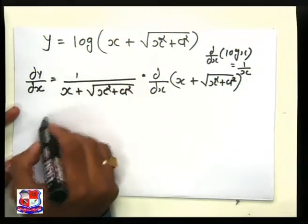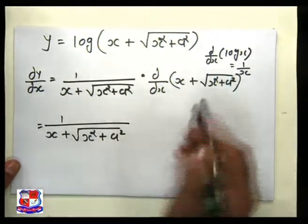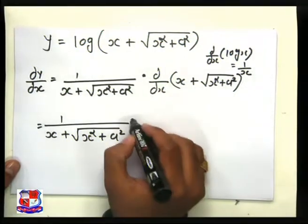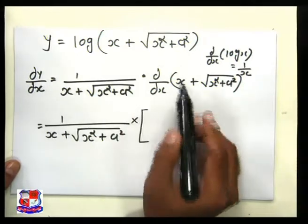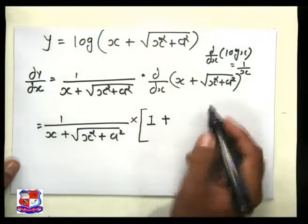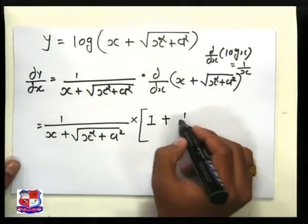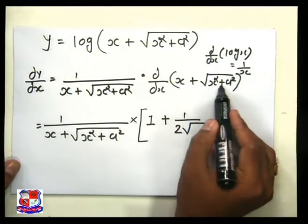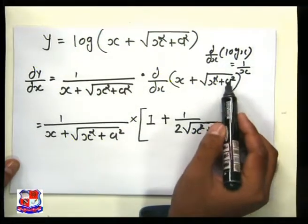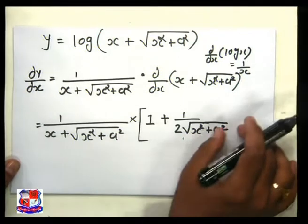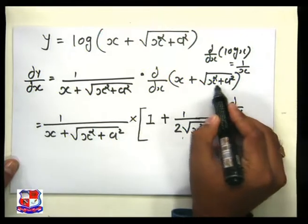Writing the term x + √(x² + a²), and taking its differentiation: differentiation of x is 1, plus the differentiation of √(x² + a²) — treating it as √x — gives 1 upon 2√x. So we get 1 upon 2√(x² + a²) multiplied by d/dx of (x² + a²).